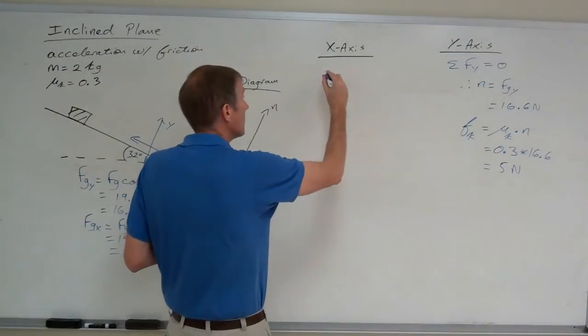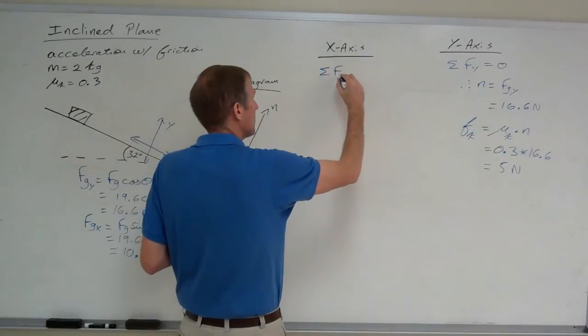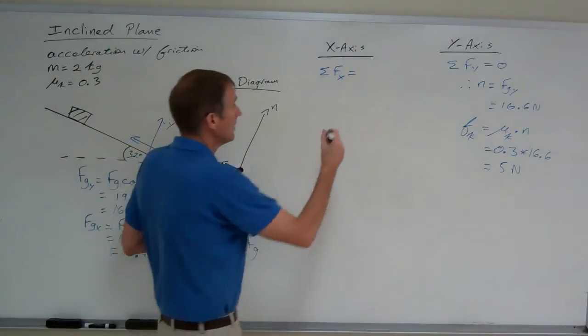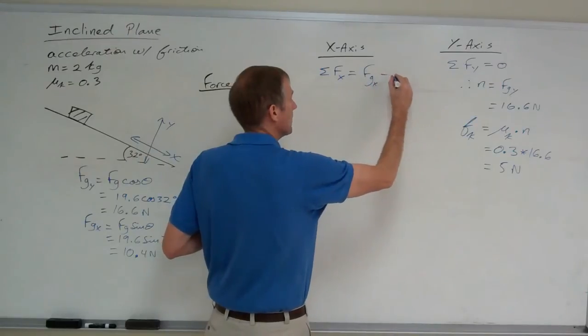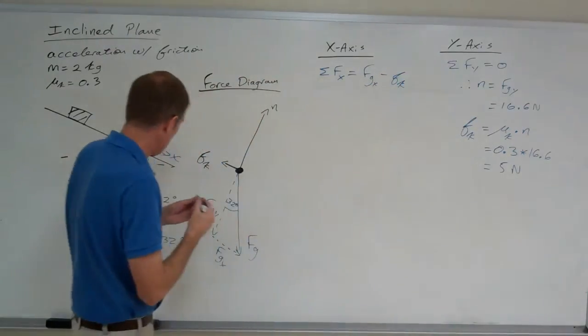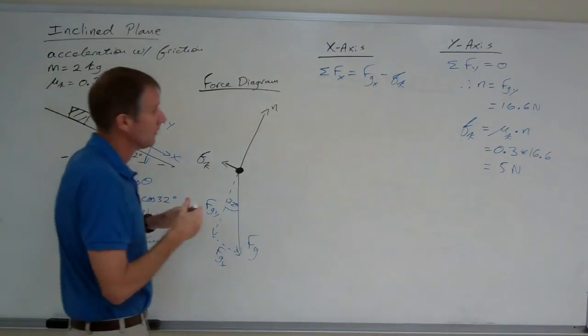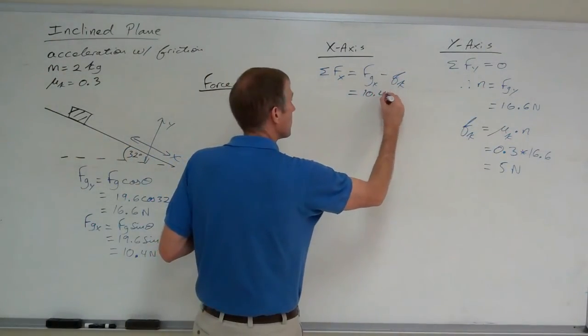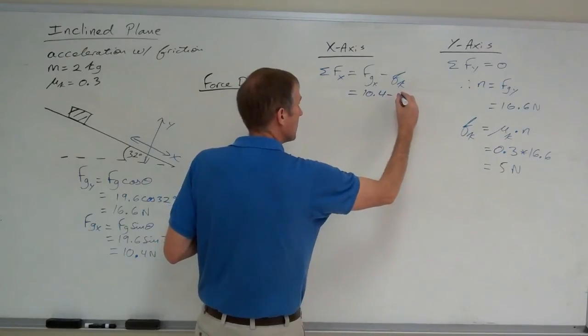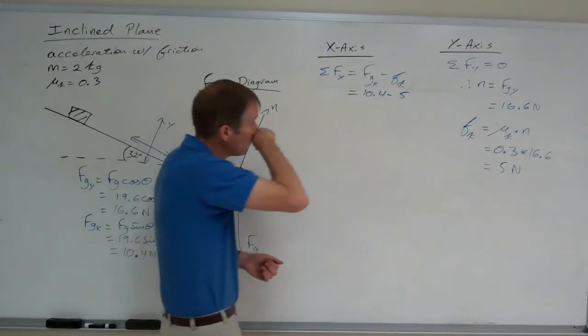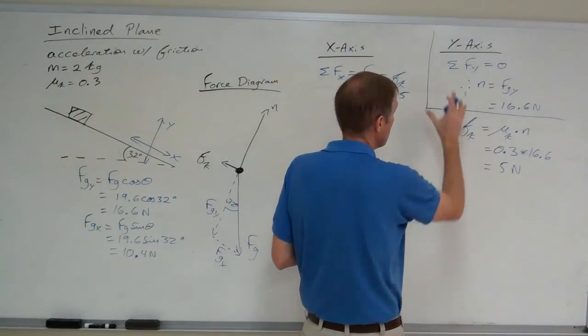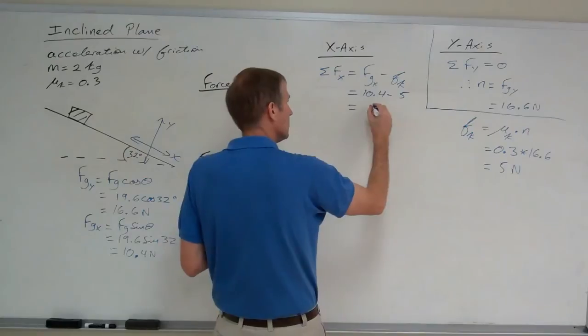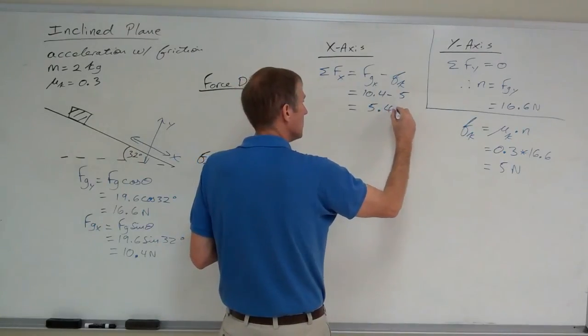Okay. Now, I need to know the net force in the x-axis. The net force in the x-axis is the difference between the downhill force and the uphill force: Fgx minus kinetic friction. Again, Fgx downhill, kinetic friction uphill. Fgx is 10.4. Friction is 5. This is all in the x-axis. I should not have put that under the y-axis. This comes out to be 5.4 newtons.